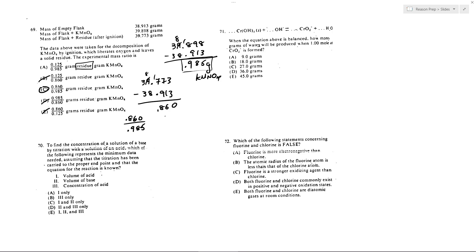Number 70. Define the concentration of a solution of a base by titration with solution of an acid. Which of the following represents the minimum data needed, assuming that the titration has been carried to the proper endpoint and that the equation for the reaction is known?